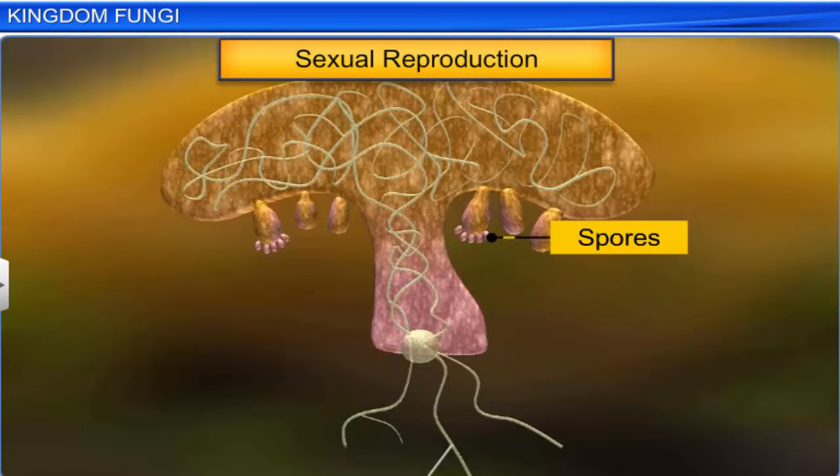The third stage involves reduction division — that is, meiosis — to form haploid spores. Meiosis occurs in the fruiting bodies of fungi. The fruiting bodies, the mode of spore formation, and the morphology of the mycelium form the basis for dividing the fungi into various classes. There are four main classes of fungi: Phycomycetes, Ascomycetes, Basidiomycetes, and Deuteromycetes.